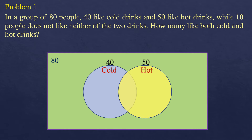There is an additional given: 10 people don't like neither of the two drinks. So we are going to put this 10 outside the two circles because they don't like any of the two drinks. But still, these 10 are part of the 80 people. So the total inside the circles must be 70, because 70 plus 10 makes 80. This means cold plus hot must equal 70, including those who like both.